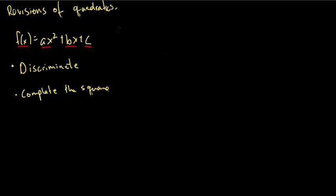There are two ways that you can solve for any kind of quadratic. The first one would be the discriminant, and the next one would be complete the square. To give a revision of what is a discriminant, here's the formula. x1 or x2 equals negative b plus or minus the square root of b squared minus 4ac over 2a.